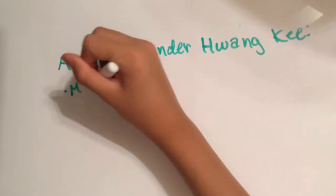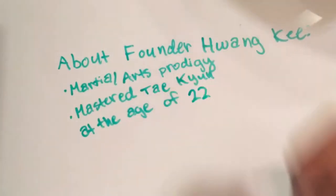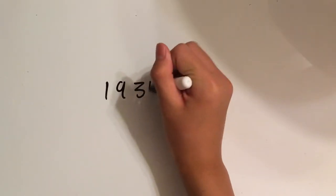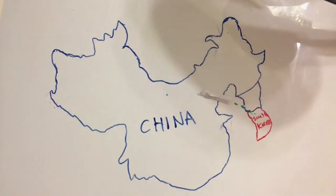Founder Huang Gi was a martial arts prodigy. He mastered Taikyan, another Korean martial art, at the age of 22. In 1936, he traveled to northern China, where he saw a Chinese style of martial artistry.